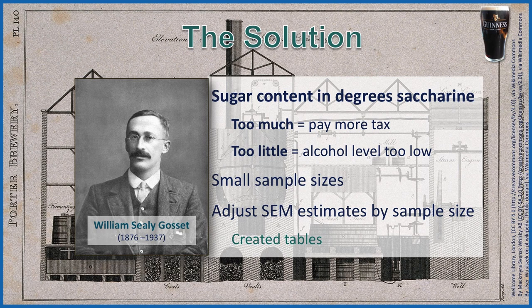Let's use an example that might have been in place when Gossett was doing his research. The problem is how much sugar is in the mix that will be fermented and turned into beer. The sweetness is measured in degrees saccharin, and that sugar content is very important. If you have too much sugar, the alcohol content will be too high, meaning you pay higher taxes. But if the sugar content is too low, the alcohol content will be too low and customers won't be satisfied. So there is a small range in which that sugar content must fall for consistent brewing over time.